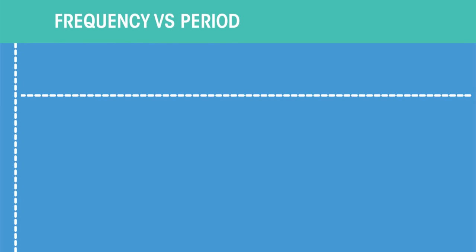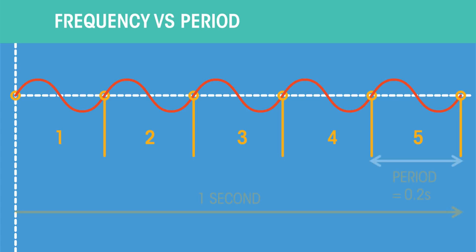The frequency and period are often confused. The frequency refers to how often something happens, whereas the period refers to the time it takes to happen.